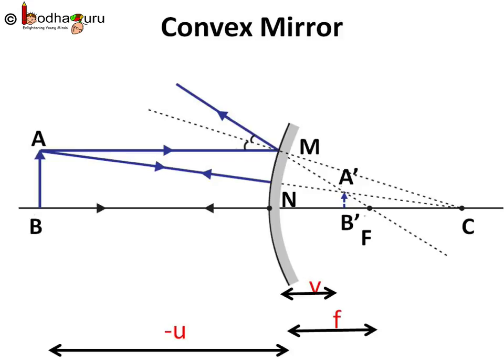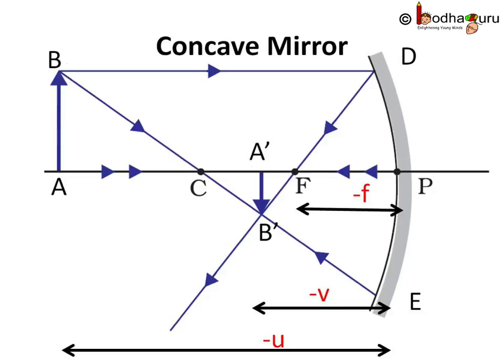So u, which is the object distance, has a negative sign as it is left of P, whereas f the focal length and v the image distance are positive as they are right of P.